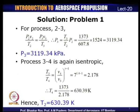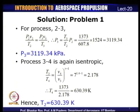For process 3→4, which is also isentropic, using T₃/T₄ = (V₄/V₃)^(γ−1) = 7^0.4 = 2.178, we get T₄ = 1373/2.178 = 630.39 K. We have now calculated temperatures and pressures at all salient points: state 1 was specified; states 2, 3, and 4 have been determined.